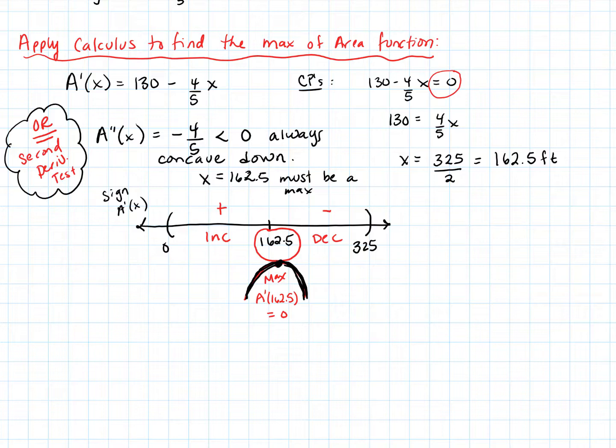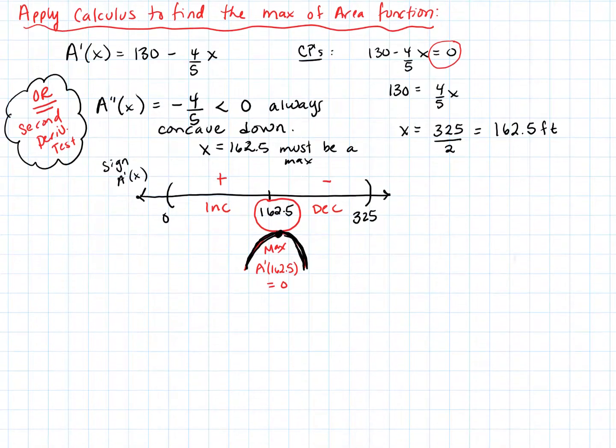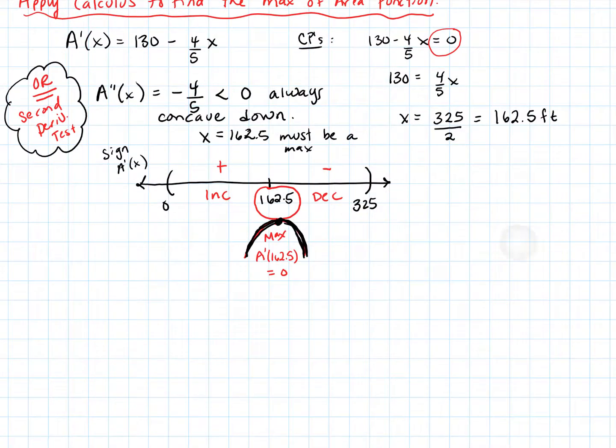Now, of course, you don't have to do both if you've done the sign chart. And I actually tend to default just to the sign chart, especially if I have multiple critical points. But just a quick mention that we could have used that second derivative test here. So, either way, we have shown that this point is a maximum. And so, now all we have left to do is find y and the area. So, now let's find y and area.